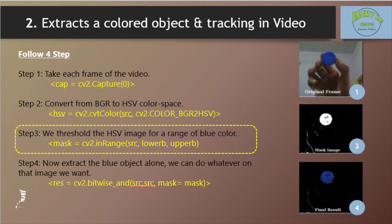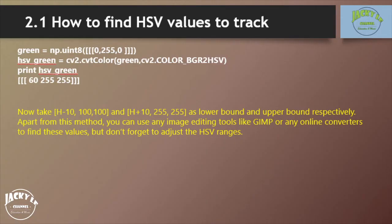You can see the detail 4 steps in the video. However, in step 3, to find the HSV value upper and lower bounds to track, it is very simple — you can use the same CVT color function. Instead of passing an image, you just pass the BGR values you want.